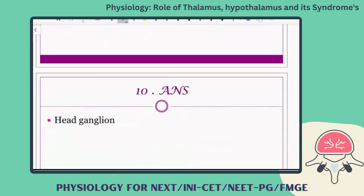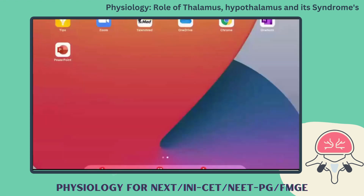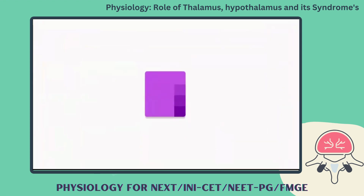Finally, the hypothalamus serves as the head ganglion for the autonomic nervous system.